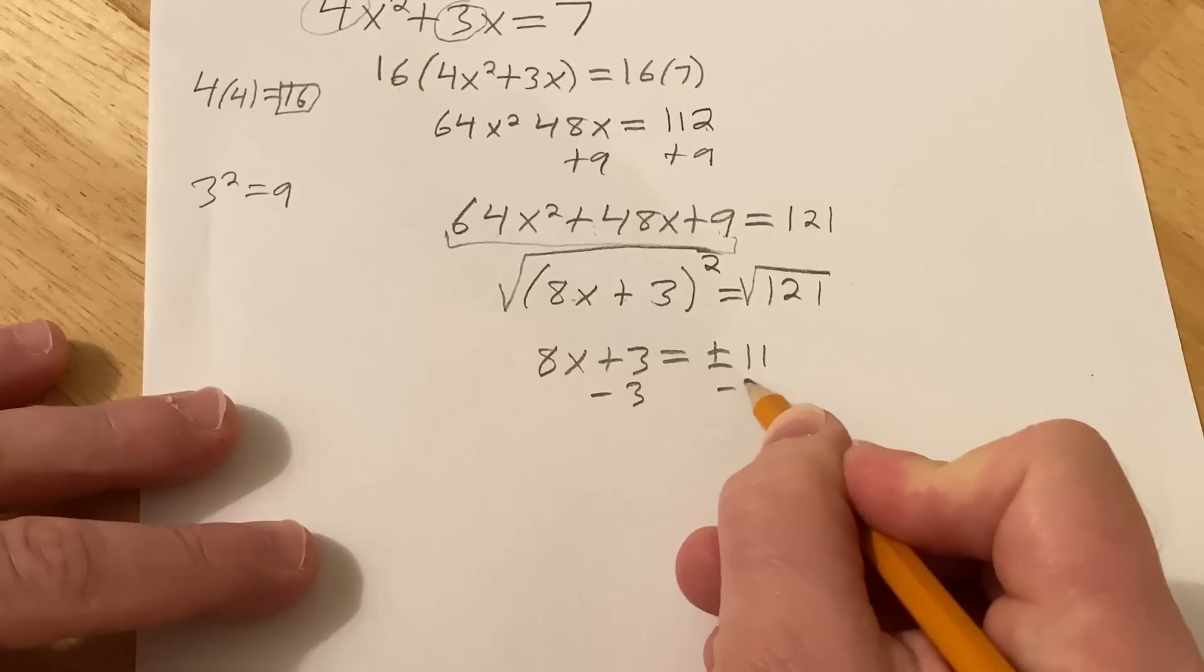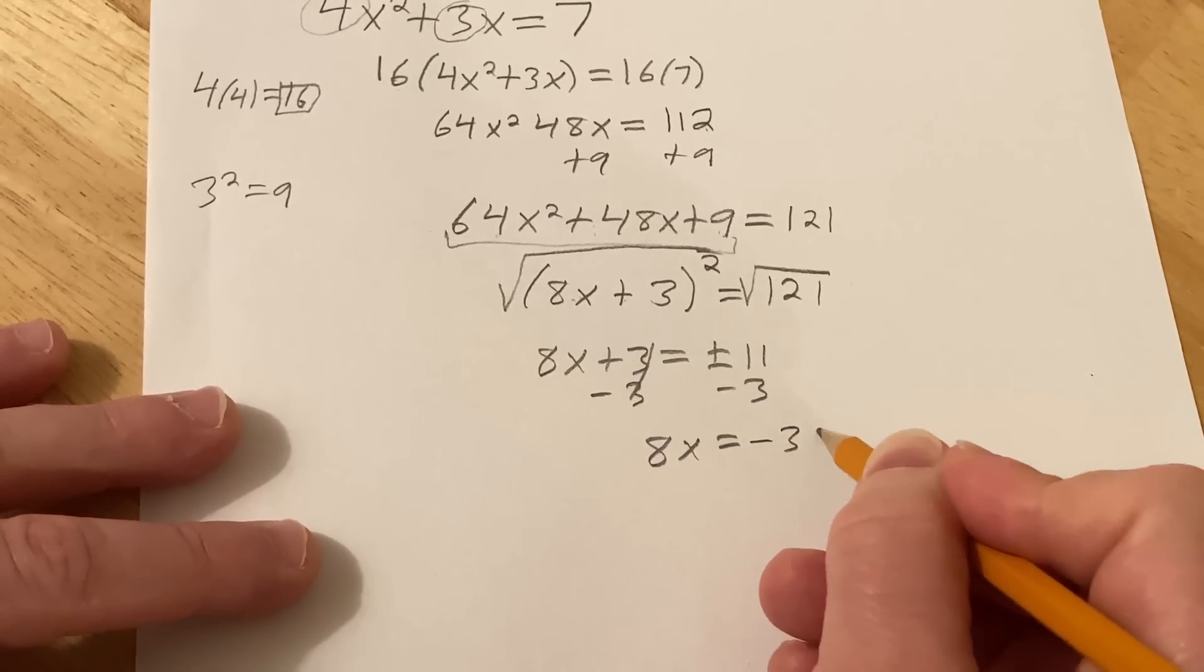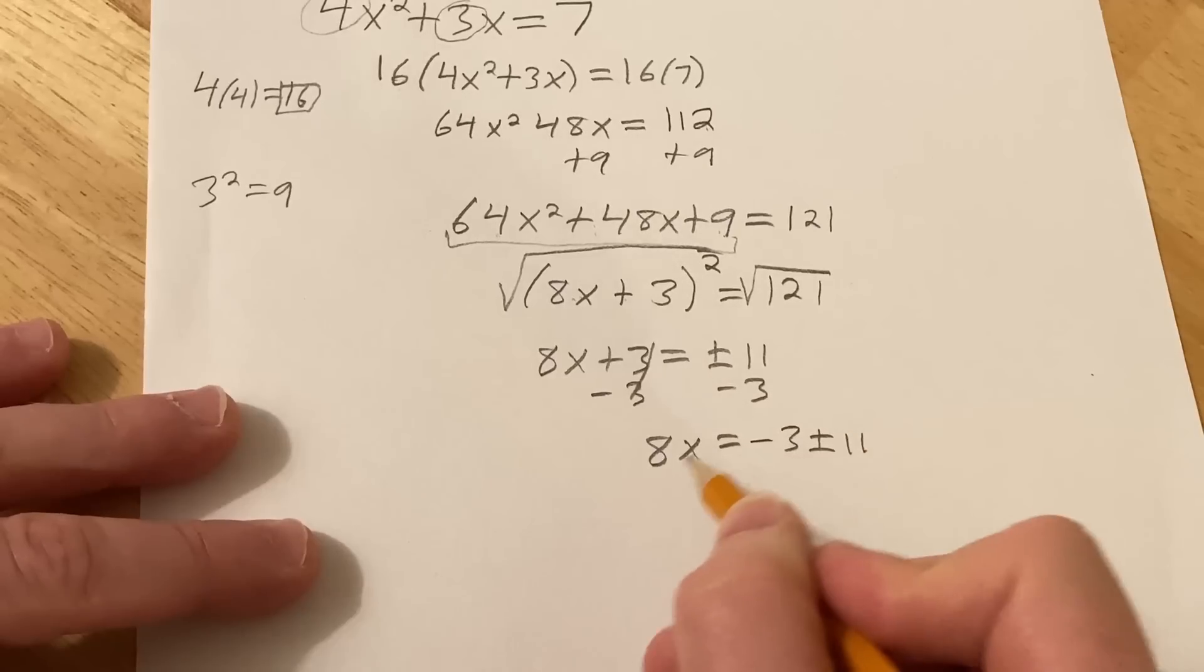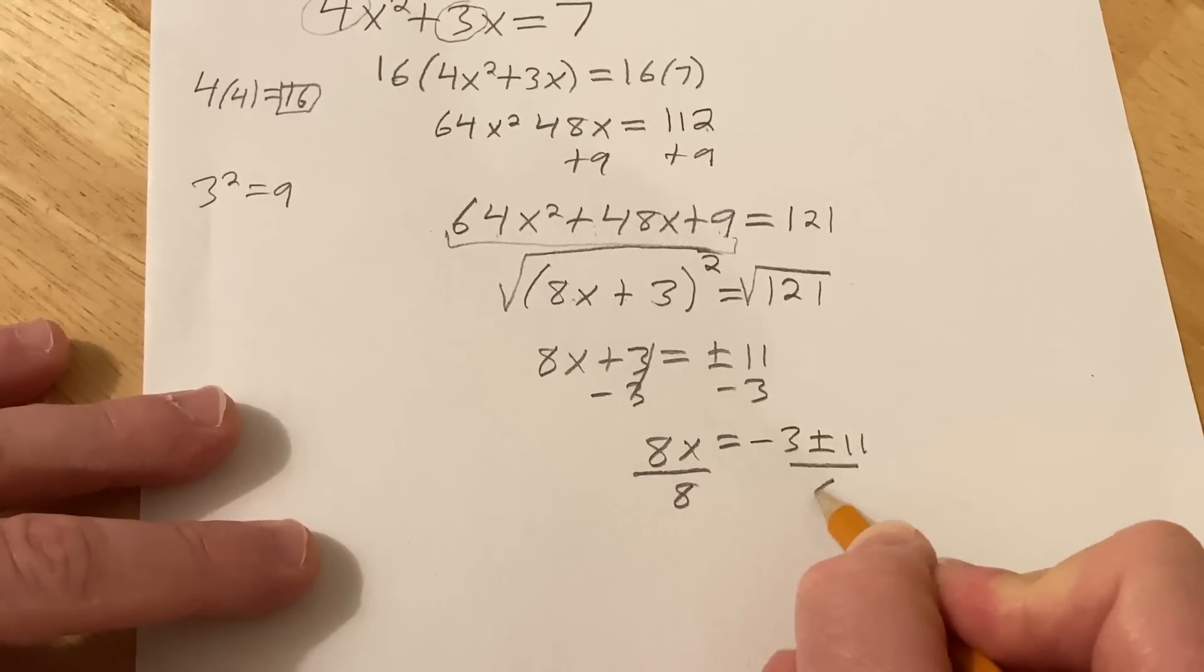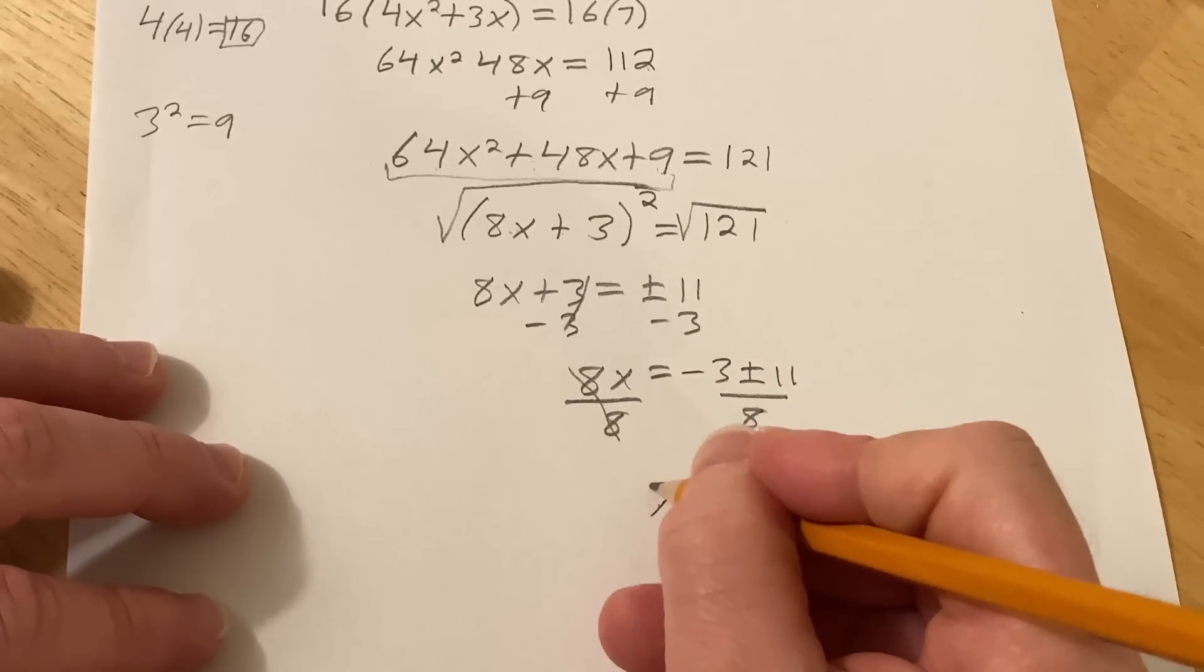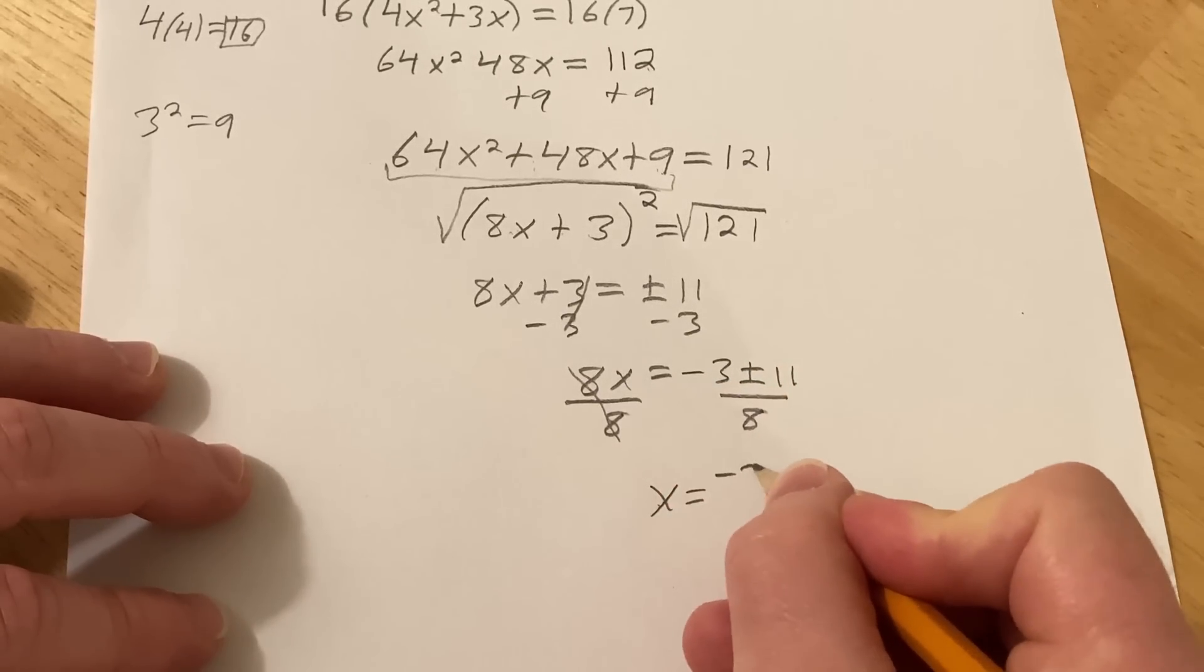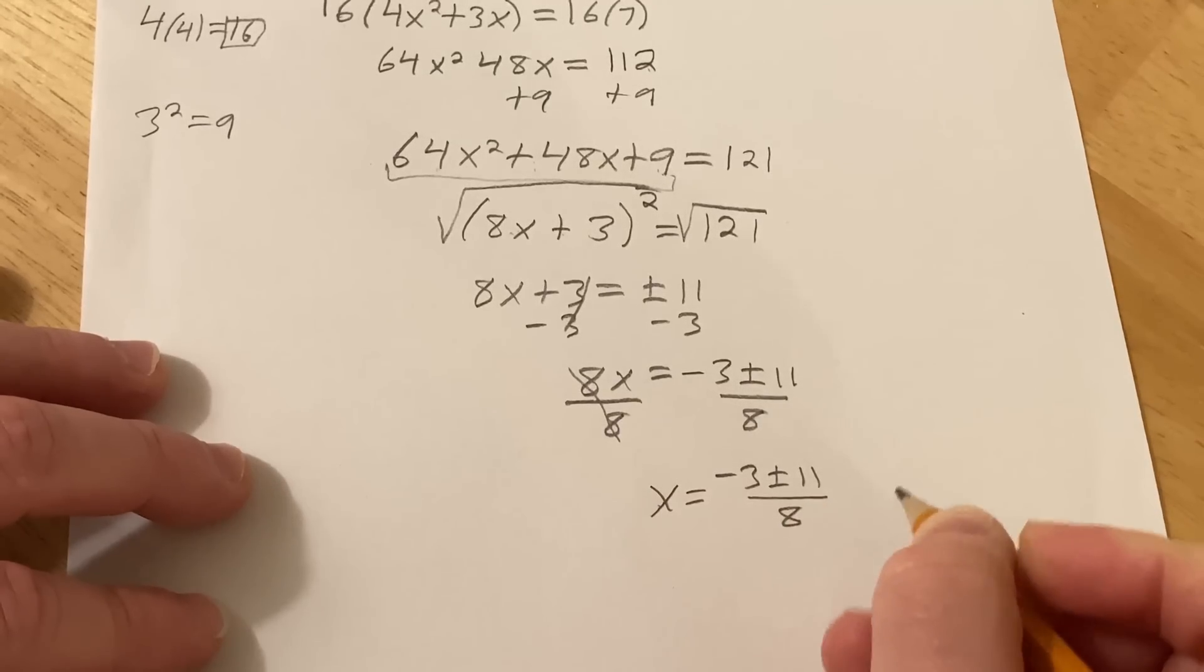It's minus 3 minus 3. So you get 8x equals minus 3 plus or minus 11. Divide by 8. Going pretty quick, but I'm going to do another example. The examples in this video will get harder and harder.